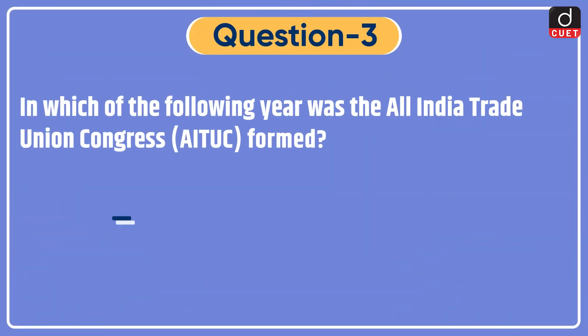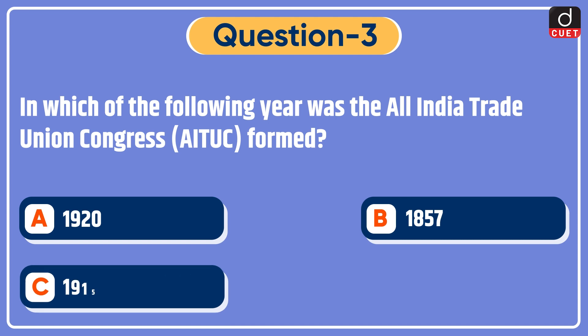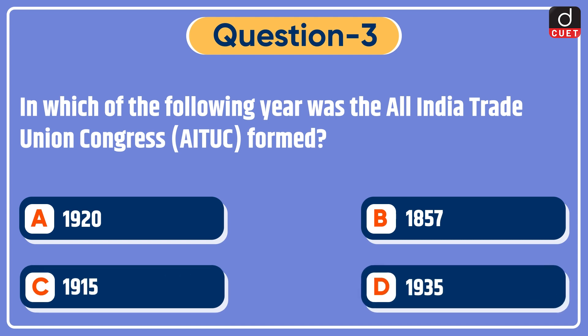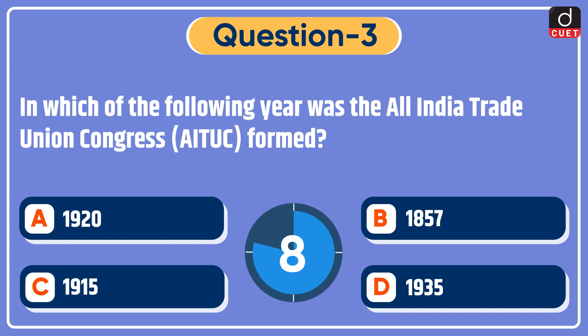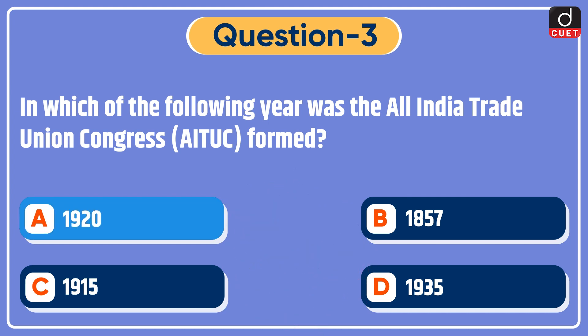Next question: in which of the following years was the All India Trade Union Congress formed? 1920, 1857, 1915, or 1935? The correct answer is option A, 1920.